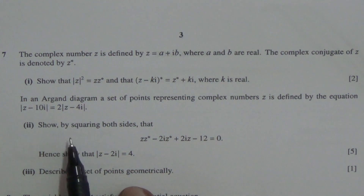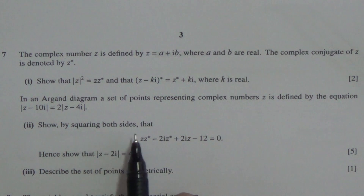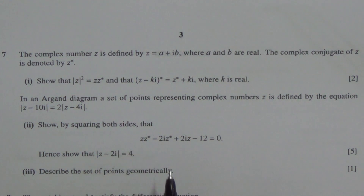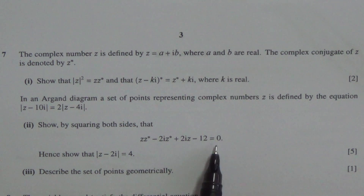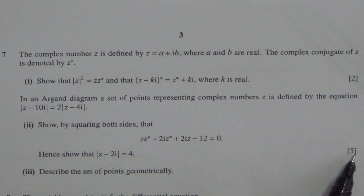Show, by squaring both sides, that z·z* minus 2i·z* plus 2i·z minus 12 is equal to 0. Five marks.